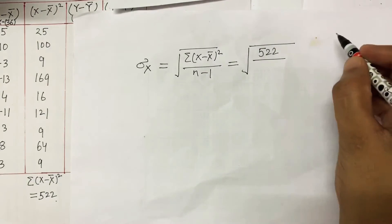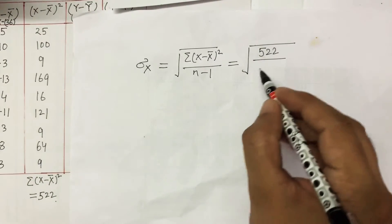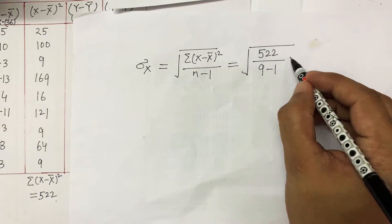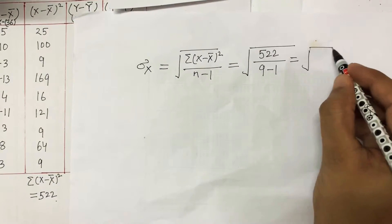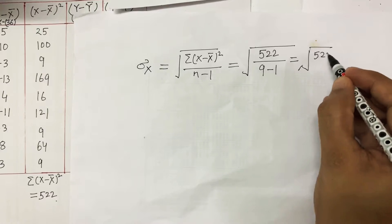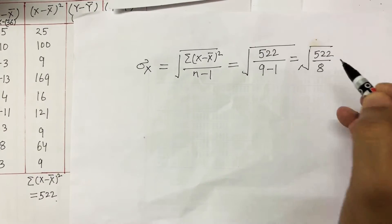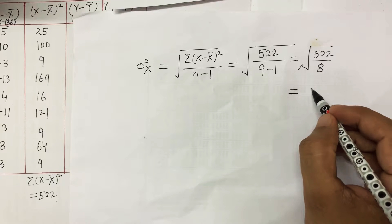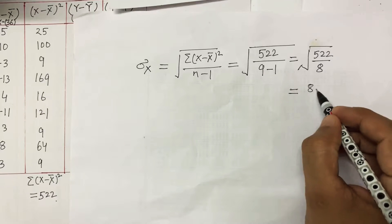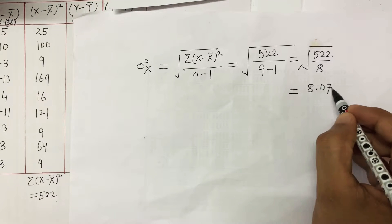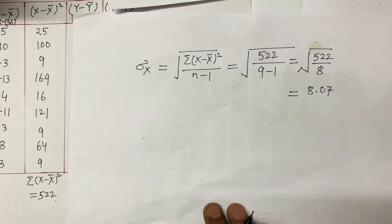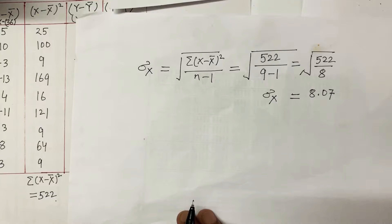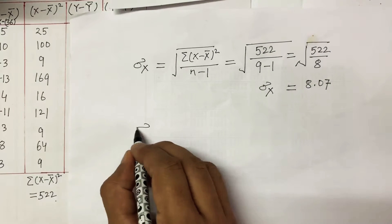Calculating the square root of 522 divided by 8 gives a value of 8.07. So the standard deviation for series X is 8.07. Now let's calculate the standard deviation for series Y.